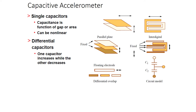From a theoretical perspective, because of the applied accelerations or force, displacement changes and that is converted into change in capacitance. For the parallel plate capacitor, there are three parameters: overlap area, gap between electrodes, and dielectric medium. The dielectric medium is air, because the plate has to move in between. This is called a single capacitor where capacitance is a function of gap or area — it can move in the gap-changing direction or the overlap-area-changing direction, but it can be non-linear.